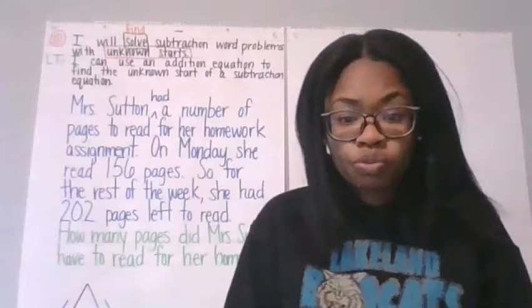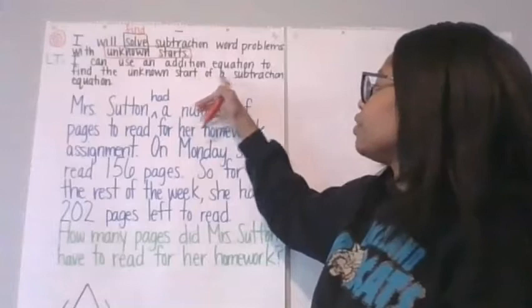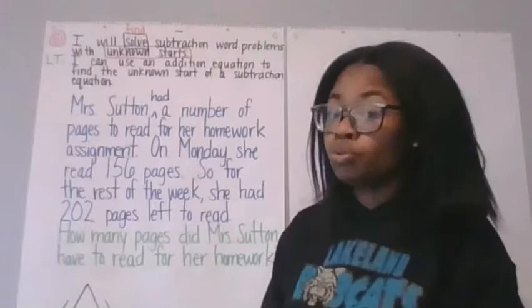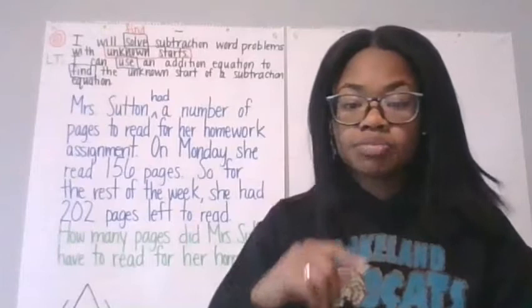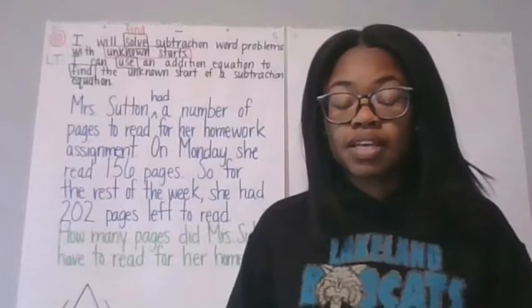Our success criteria today: I can use an addition equation to find the unknown start of a subtraction equation. The verbs are use and find. Addition means we are going to turn that subtraction problem into an all-together problem — an add-in plus an add-in equals the sum. We have learned this since the beginning of second grade with our fact family triangles.